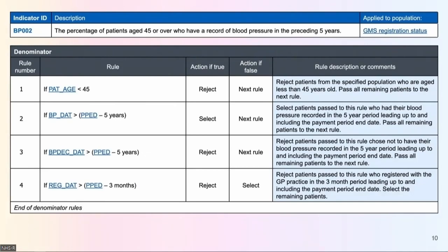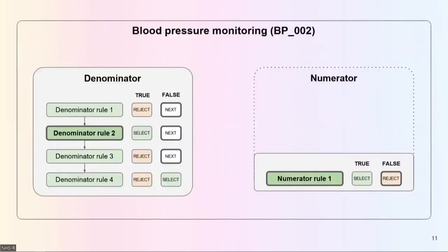What helped me understand this was breaking it down into a flowchart. Essentially there are a series of rules with logic: depending on whether a rule is met or not met, someone is rejected or passed on to the next rule. We're trying to build a denominator first, then apply a numerator to it. This blood pressure indicator represents the percentage of patients above 45 who had a blood pressure recording in the previous five years — it's one of the simpler ones.